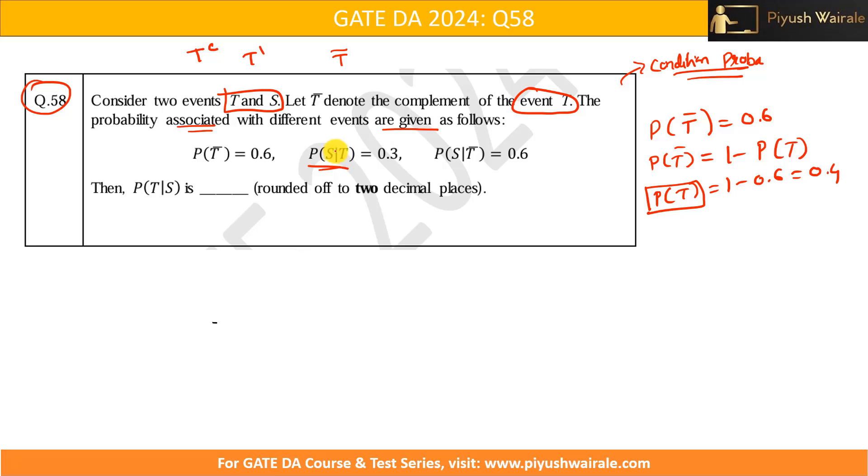Also, probability of S given T is given to me. Probability of S given T complement is also given to me that is 0.6. And we need to find out probability of T given S. Okay. So, this is what we need to find out.